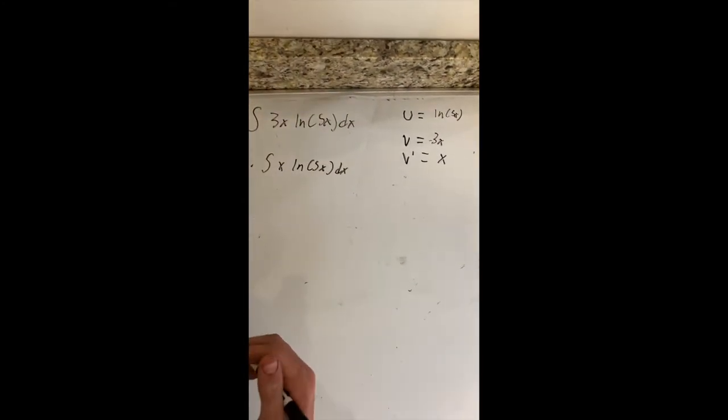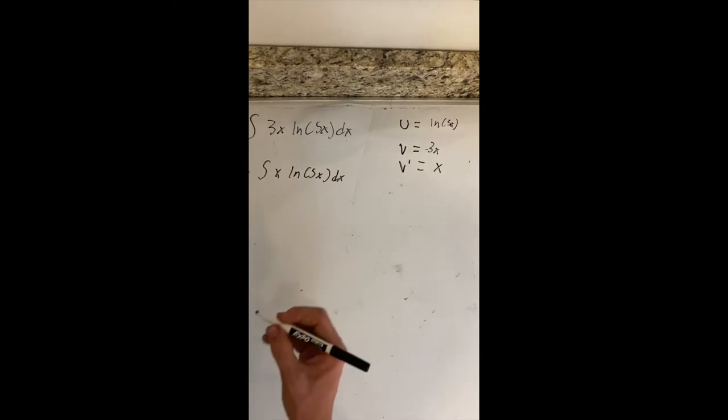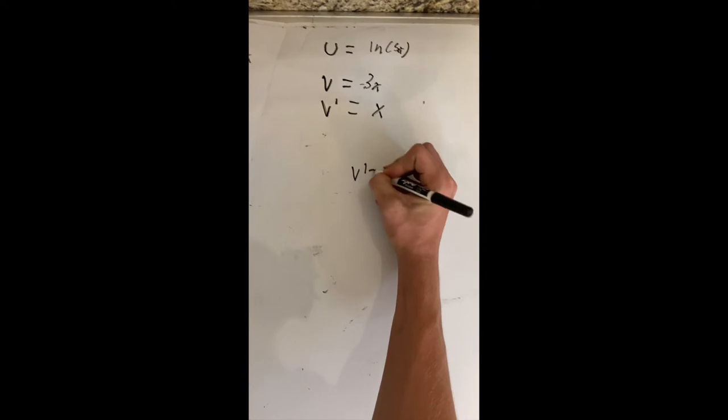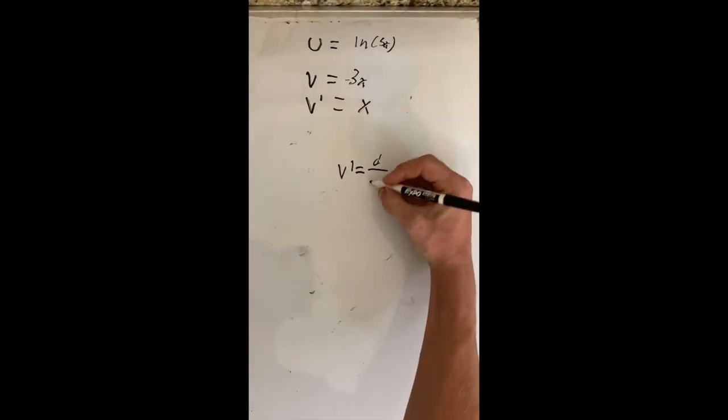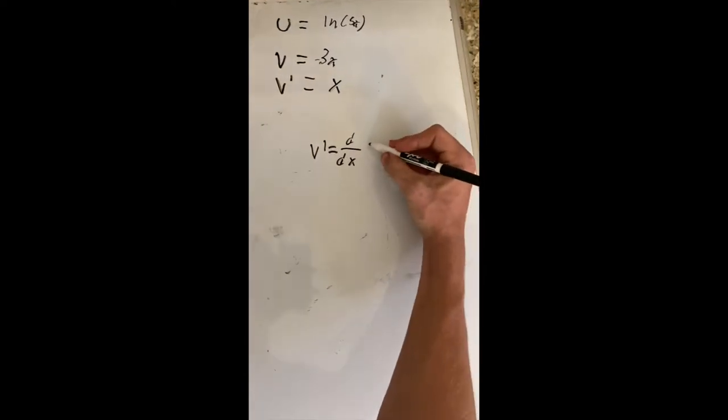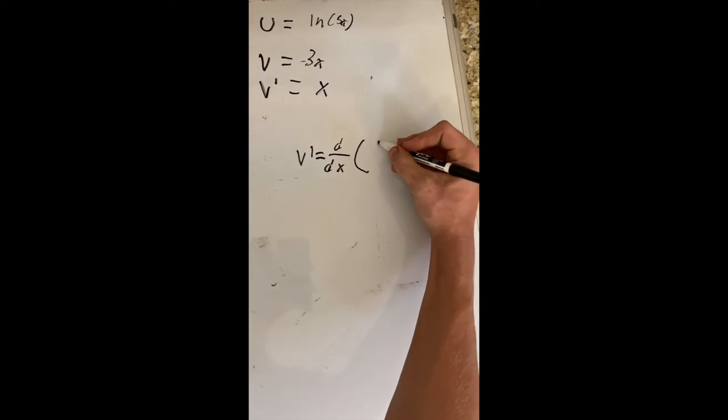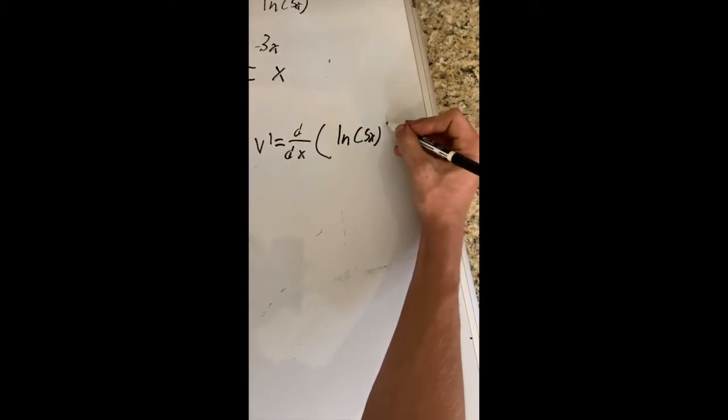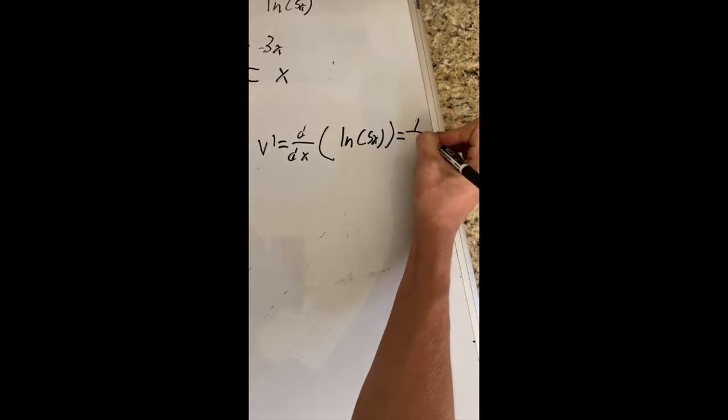So now that I have that, I'm going to put... Let's put this over here. I'm going to put v prime is equal to d divided by dx of ln 5x. And that is going to equal 1 divided by x.